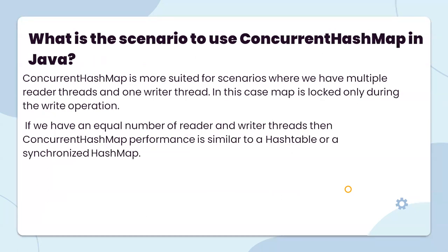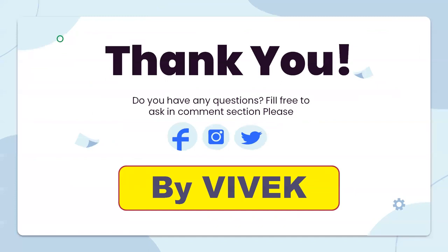What is the best scenario to use ConcurrentHashMap in Java? ConcurrentHashMap is most suitable for scenarios where we have multiple reader threads and one writer thread. In this case, the map is locked only during the write operation. If we have an equal number of reader and writer threads, then ConcurrentHashMap performance is similar to Hashtable or synchronized HashMap. These are all 20 questions covered in this session. Thank you, follow and like our channel.